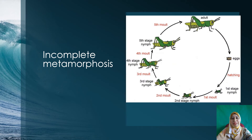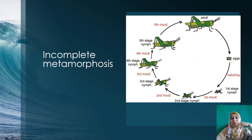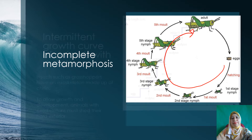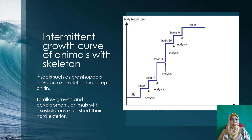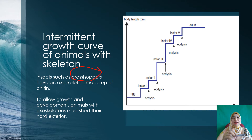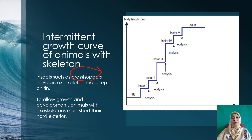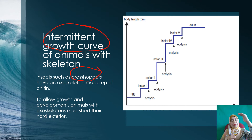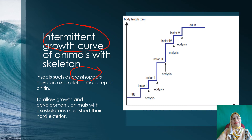Grasshopper is an example of an insect that undergoes incomplete metamorphosis, whereby the grasshopper has to undergo the stages of ecdysis a few times before it can reach the adult stage. This intermittent growth curve applies to animals with an exoskeleton — the skeleton is on the outside and is hard because it is made of chitin.